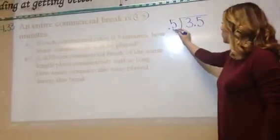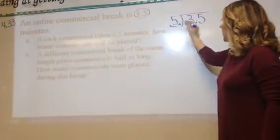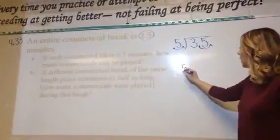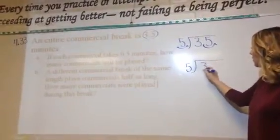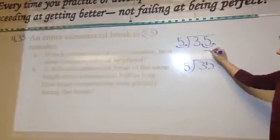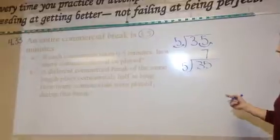And we have been working on making the divisor a whole number, so move this the same amount of places. Now you're working with the whole number five and the whole number thirty-five, which means how many commercials could you get? Seven of them on part A.